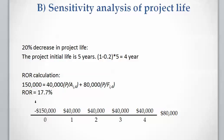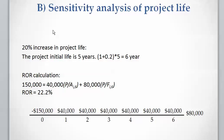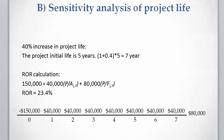A 20% increase in project life gives 1 plus 20% multiplied by 5, which is 6 years, resulting in a rate of return of 22.2%. If the project lifetime is increased by 40%, giving 1 plus 40% multiplied by 5 equals 7 years — two more years of project lifetime — the rate of return is calculated as 23.4%.